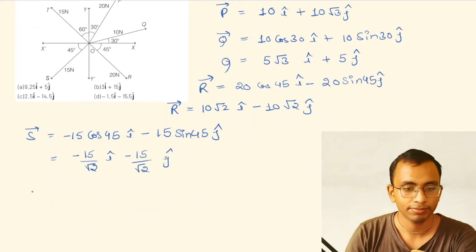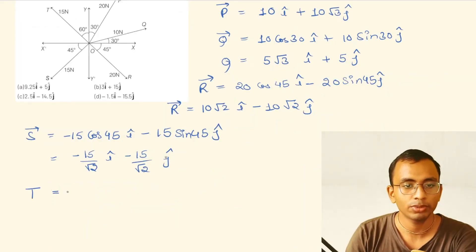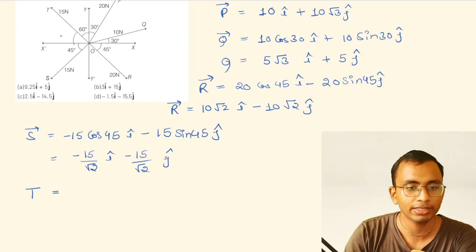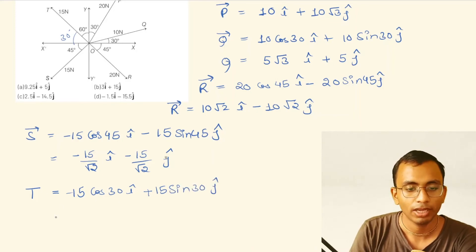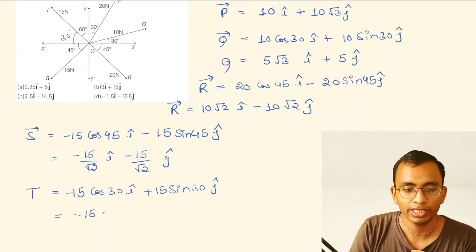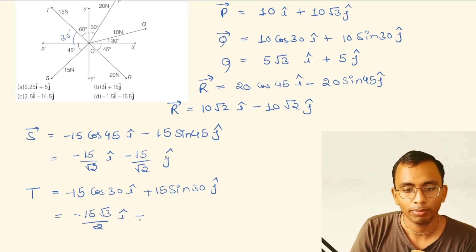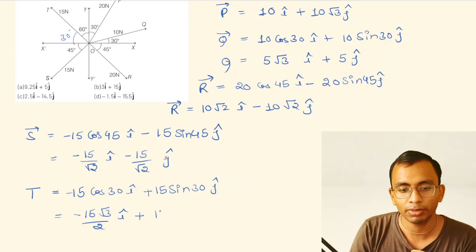Now writing T. Its magnitude is 15, making an angle of 30 degrees with the negative x-axis. So T equals -15 cos 30° î + 15 sin 30° ĵ. Since cos 30° is √3/2, this is -15√3/2 î, and since sin 30° is 1/2, plus 15/2 ĵ.